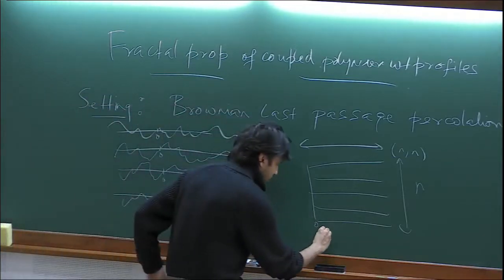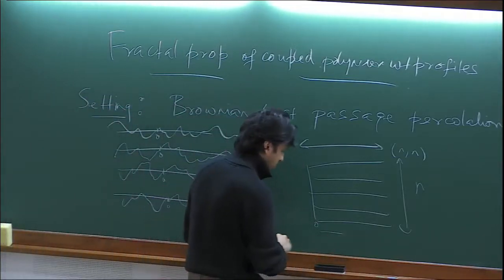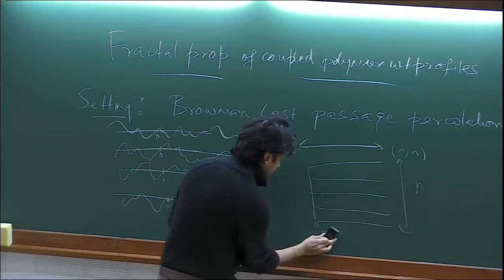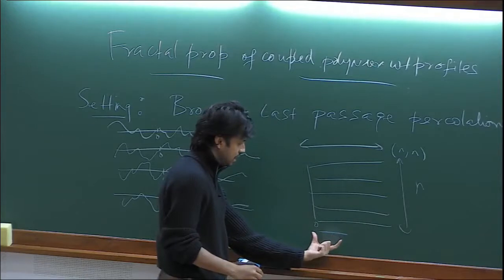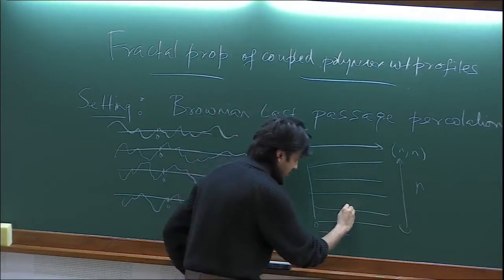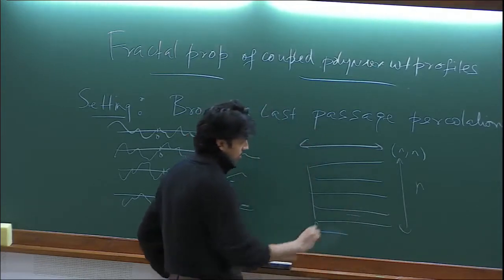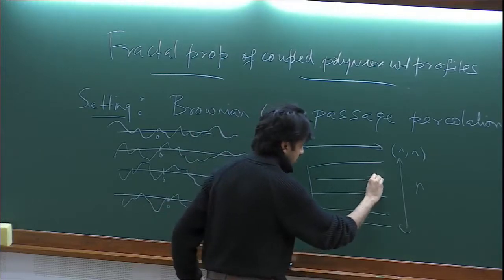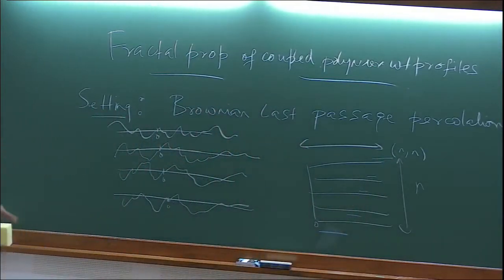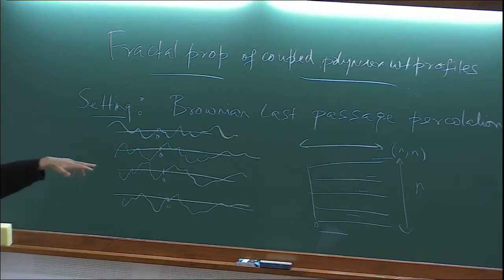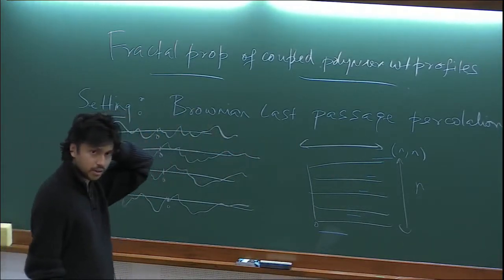A path can look like this: it stays on one line for a while, then it jumps to the next line, takes an excursion there, and eventually lands at the endpoint. For every horizontal line, you spend some time there, then jump to the next one, spend some more time there, and eventually end up at the point you want to reach.